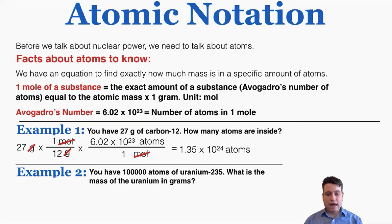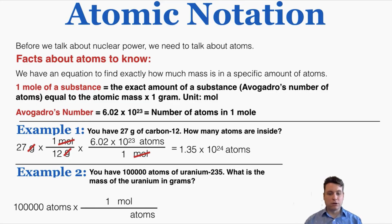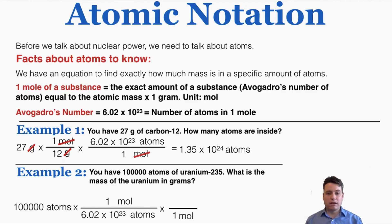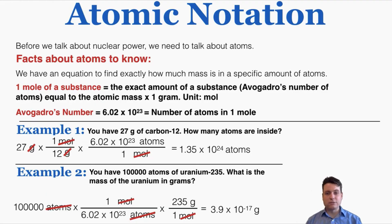Example two: we have 100,000 atoms of uranium-235 and want to know their mass in grams. Start with atoms and use the mole as the bridge. Multiply by a conversion factor with moles in the numerator and Avogadro's number of atoms in the denominator. Then multiply by the molar mass of uranium-235: since its atomic mass is 235, one mole equals 235 grams. Canceling atoms and moles gives a final answer of 3.9 × 10⁻¹⁷ grams — a very small mass for 100,000 atoms of uranium-235.